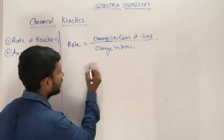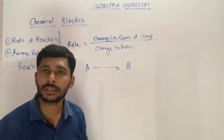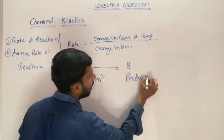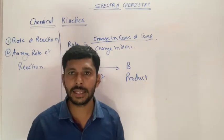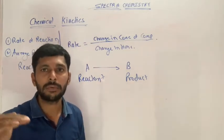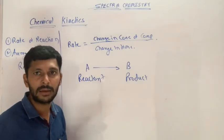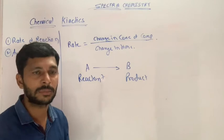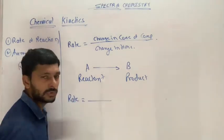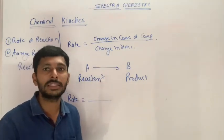Here we have a reaction A going to B. In this reaction you can understand that if you have a reactant and if you have a product — what is the reactant, what is the product? The chemical reaction starts so that the reactant concentration decreases and the product concentration increases.